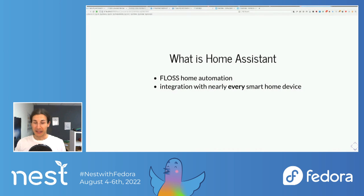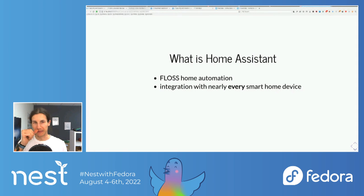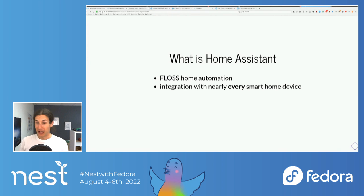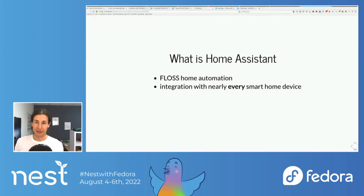The cool thing about Home Assistant is it integrates with nearly every smart home system out there — with Alexa, with Google, with Apple HomeKit. With Alexa, you can control stuff certified for Alexa; with Apple HomeKit it's what's HomeKit-certified. Home Assistant tries to work with everything. Unfortunately some integrations are spotty, but if you have smart home devices from a ton of different vendors, Home Assistant can really help you because it can talk to all of them and you're not tied to a certain ecosystem.